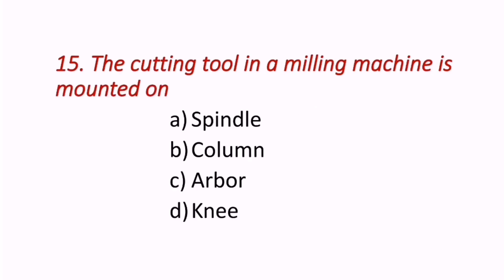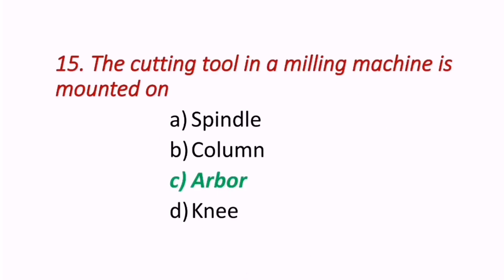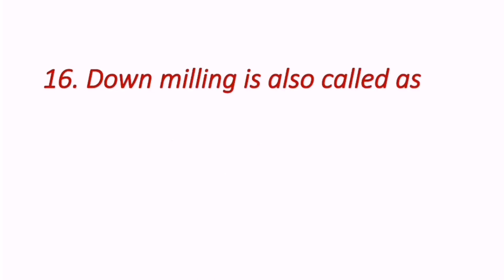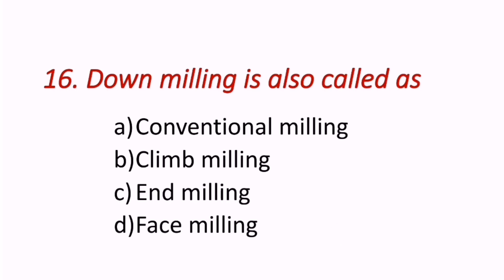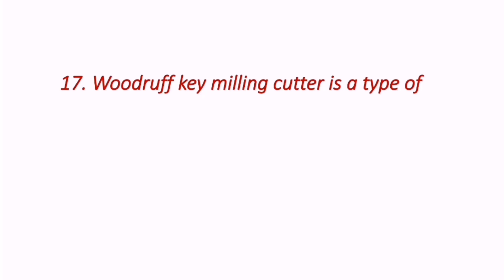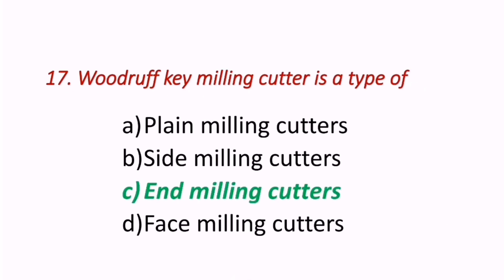Fifteenth question: The cutting tool in a milling machine is mounted on? The correct answer is C — arbor. The cutting tool is mounted on an arbor. Sixteenth question: Down milling is also called as? The correct answer is climb milling. Seventeenth question: Woodruff key milling cutter is a type of? The correct answer is C — end milling cutters.